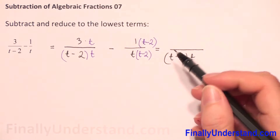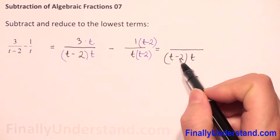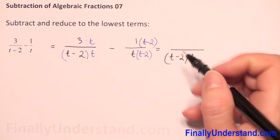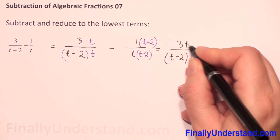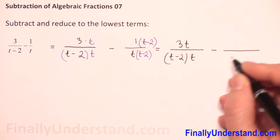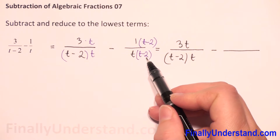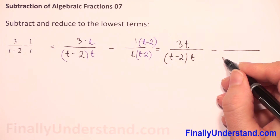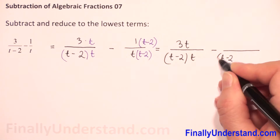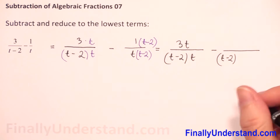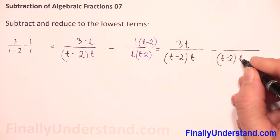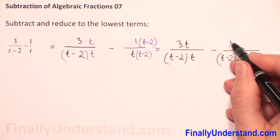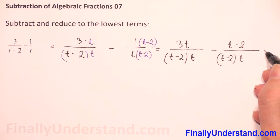So now the denominator is t minus 2 times t, and in the numerator we have 3 times t, which is 3t. The second numerator is t times t minus 2. Because I have t minus 2 and t, I will put t minus 2 first — because this is multiplication, I can change the order — times t. And 1 times t minus 2 is t minus 2.